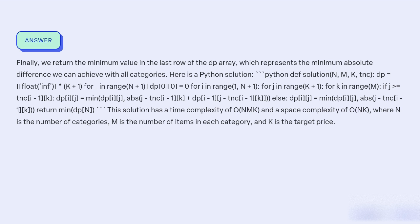The solution has a time complexity of O(n·m·k) and a space complexity of O(n·k), where n is the number of categories, m is the number of items in each category, and k is the target price.